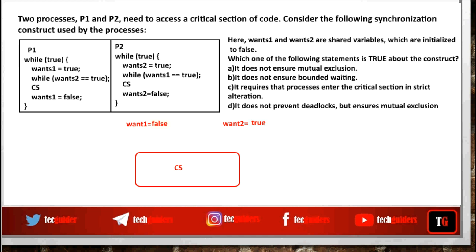Now what about strict alternation between the processes? Suppose P2 is inside the critical section, P2 exits, so once2 equals false. Again P2 needs to enter the critical section and P1 doesn't wish to enter. Then P2 can enter the critical section since the other variable is false. So as long as P1 doesn't wish to enter, P2 can enter again and again. There is no strict alternation between the processes.